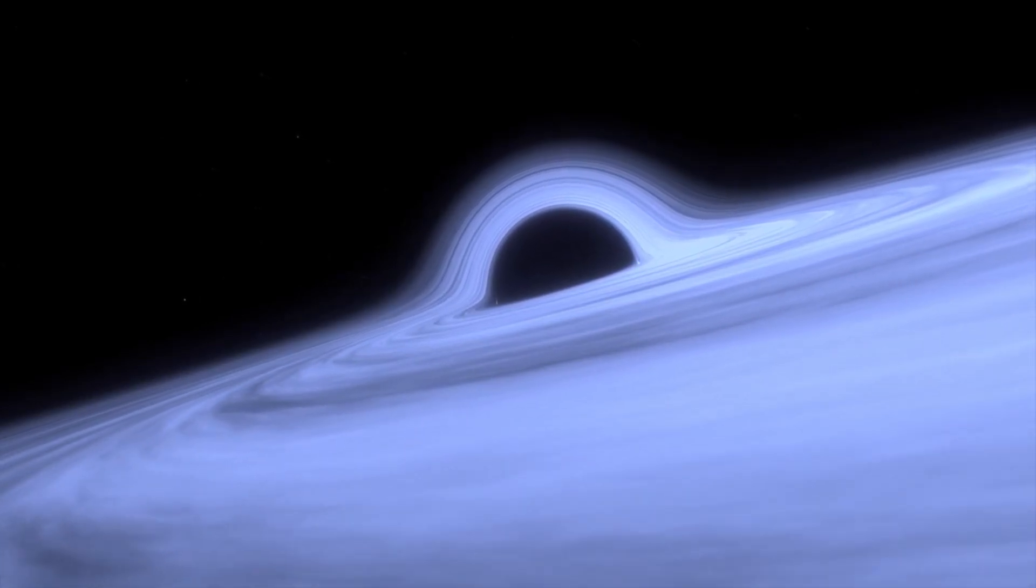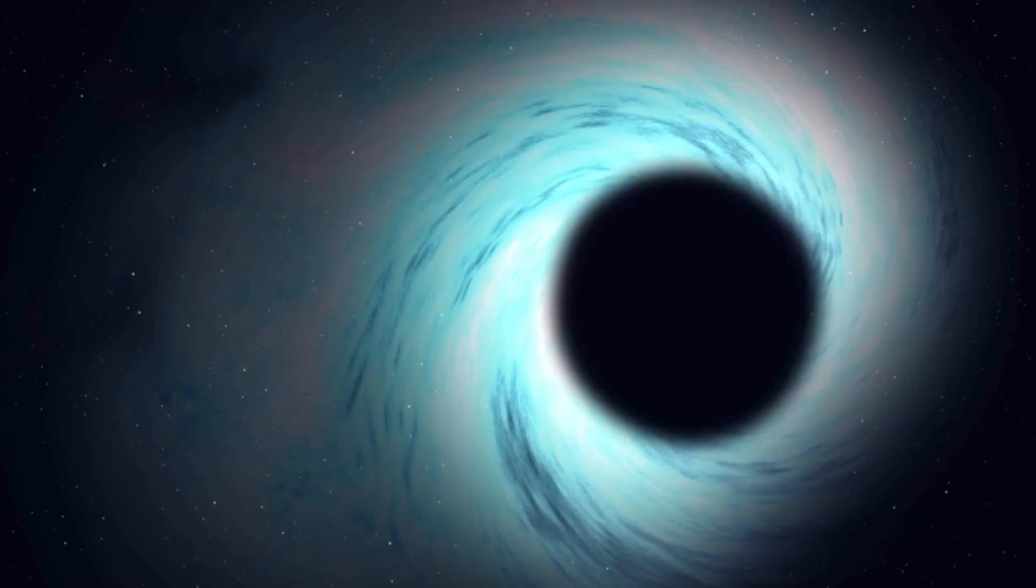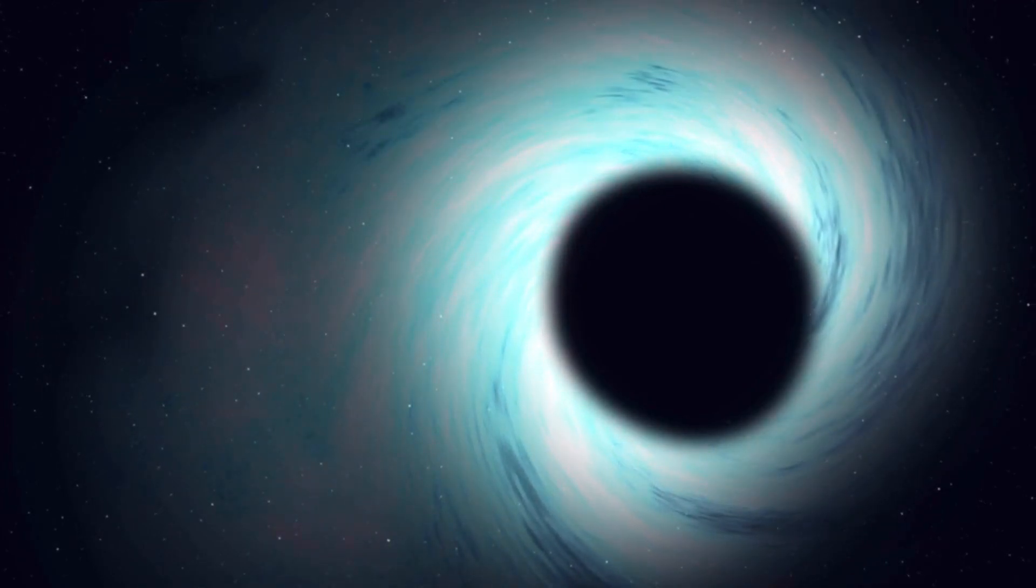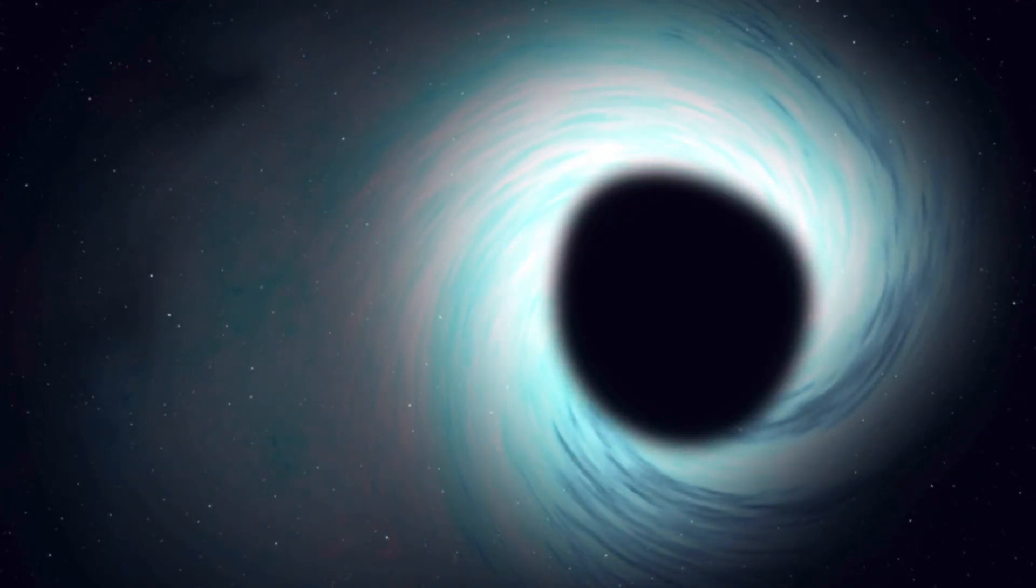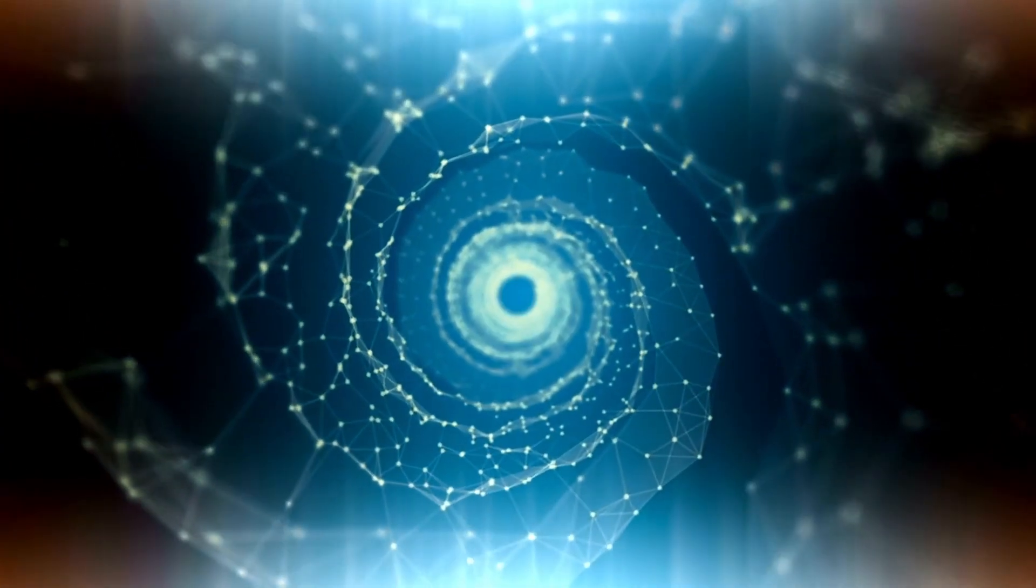As these mighty stars collapse, something strange occurs near their surfaces. Time itself starts to play tricks. From the perspective of someone far away, time appears to slow down near the event horizon, the point of no return for anything falling into a black hole. It's like the star's clock ticks at a different pace compared to ours.